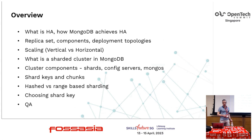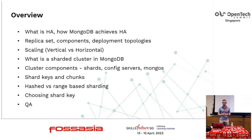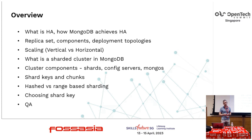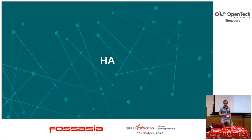In this session today, we will start with MongoDB high availability and how MongoDB achieves high availability. We'll discuss replica sets, their components, and deployment topologies. Then we'll move into scaling — horizontal and vertical scaling — what is a sharded cluster in MongoDB and its components, and at the end, the sharding strategies with MongoDB.